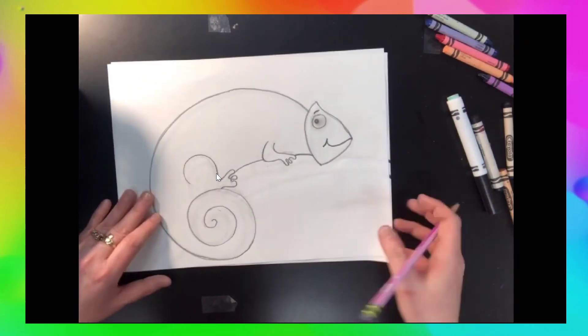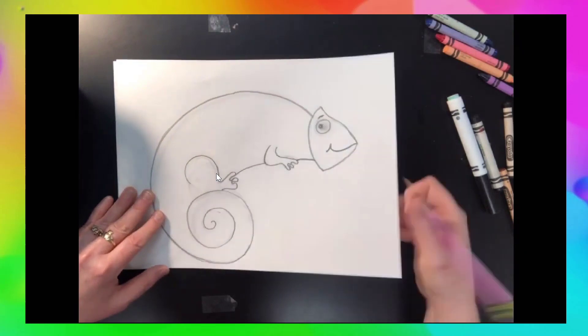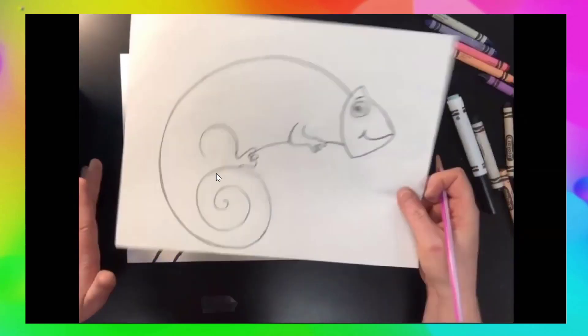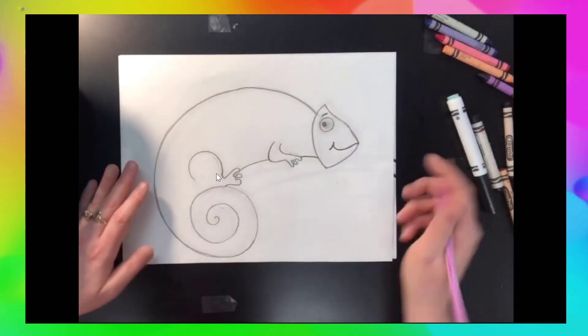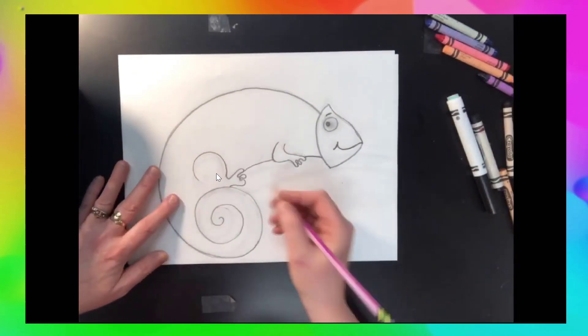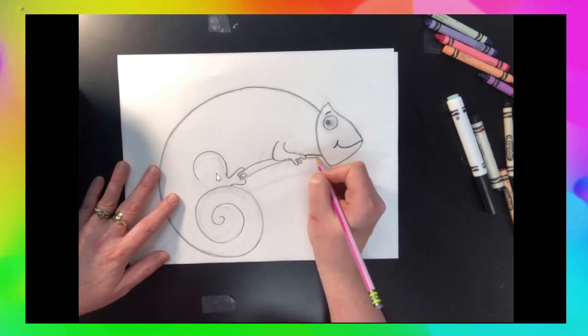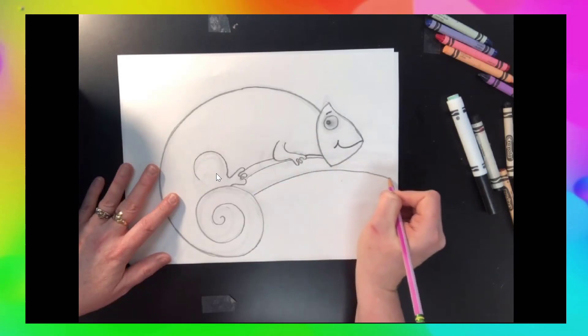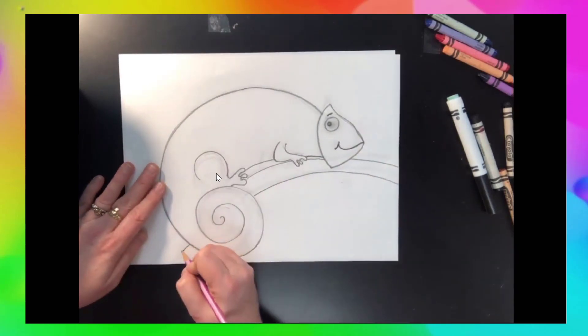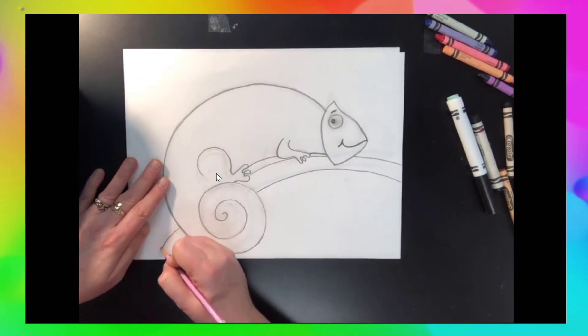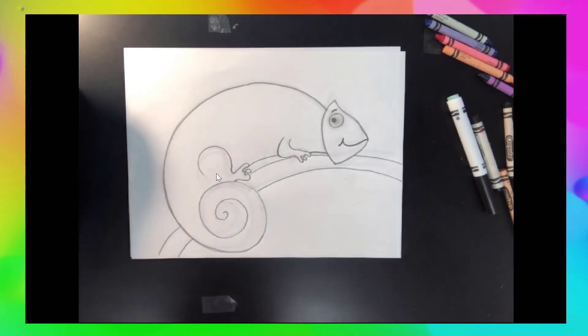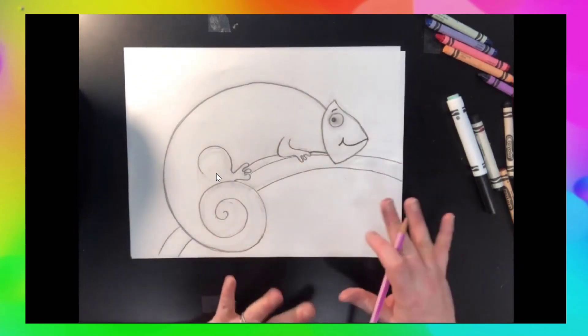Chameleons usually sit on some type of a tree branch, so we're going to make a tree branch for him to sit on. Right underneath his body, I'm going to draw a couple of lines to indicate a nice wide tree branch here, just kind of bending. Curve a couple of lines down here at the bottom to finish off the tree branch. We can add lots of leaves and details later.